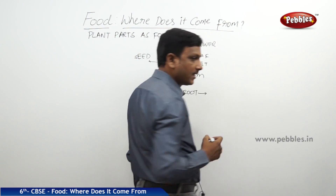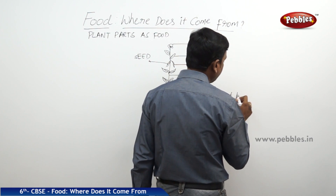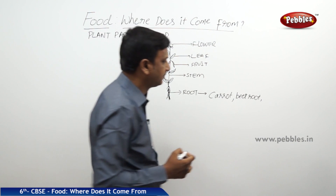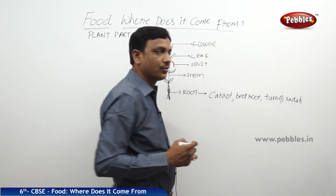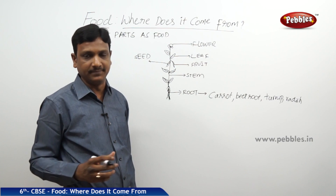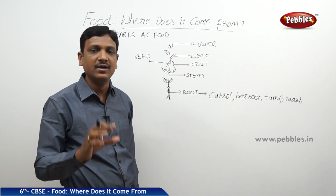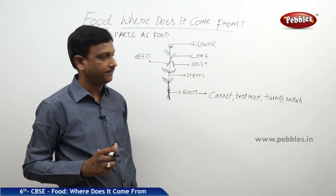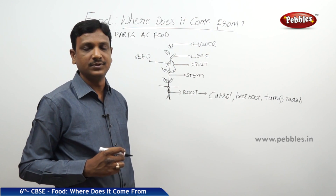Beginning with the root — the roots of different plants are used as food. Carrot, beetroot, turnip, radish — all these are the roots of different plants. So we are consuming the root; the root is used as an ingredient to make a food item. The source of food is the root of the plant. In case of a carrot or radish plant, the part we are consuming is the root.